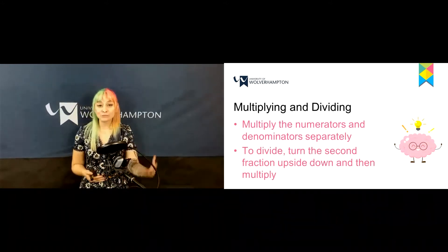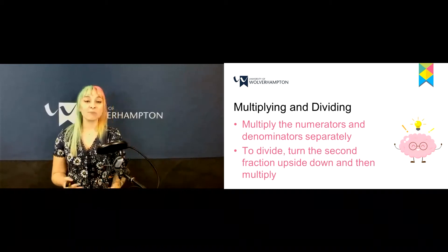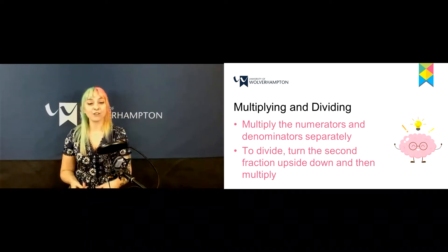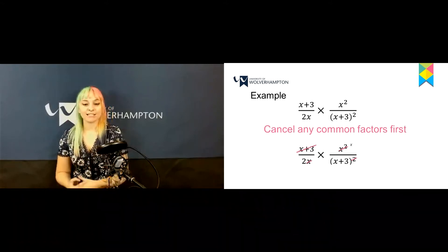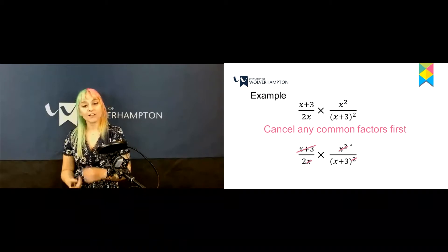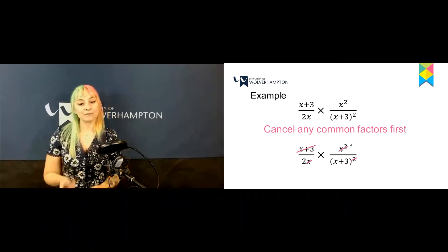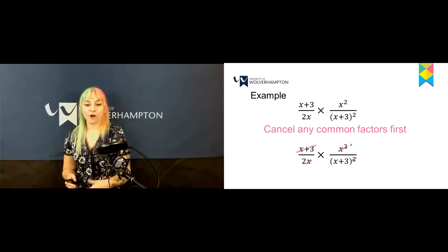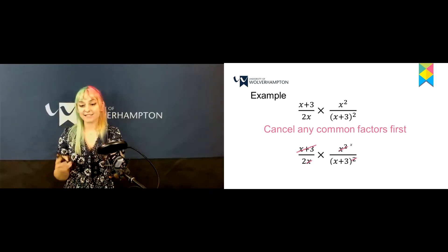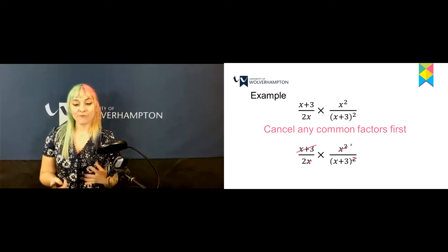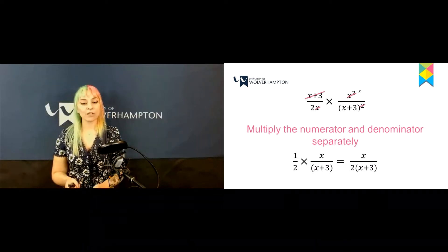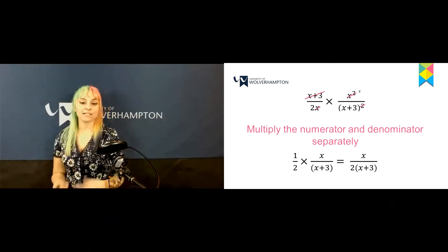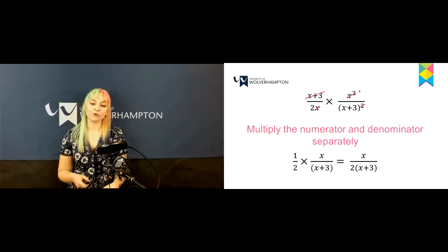You'll also need to multiply and divide algebraic fractions. You do this by multiplying the numerators and the denominators separately. However, if you are dividing, you need to flip the second fraction upside down first and then multiply. Looking at this example, we have (x+3) over 2x, times x squared over (x+3) cubed. We cancel out the common factors — x+3 and x — and then multiply numerators and denominators separately, which leaves us with x over (2x+3).